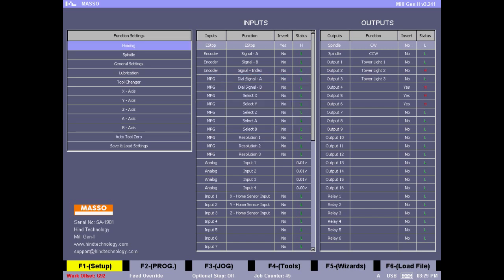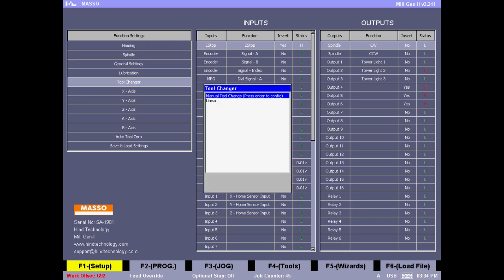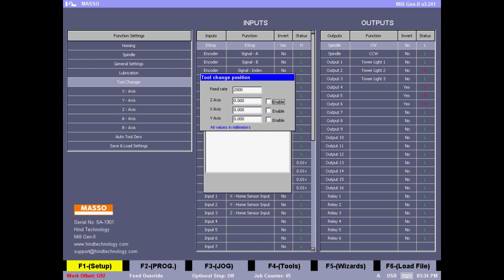It's a good idea to also enter the tool change position values. These are the values where you feel comfortable, usually on the front of the machine where you'd like to change the tool. Every time there's a tool change command, MASSO will come to this location automatically, stop the spindle, and ask you to change the tool.